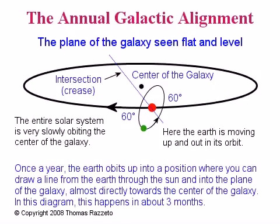The plane of the galaxy intersects the plane of the Earth-Sun orbit at an angle of sixty degrees, thirty degrees shy of straight up from the plane of the Earth-Sun orbit. This angle never changes. Once a year, the Earth orbits up into a position where you can draw a line from the Earth, through the Sun, and into the plane of the galaxy, almost directly towards the center of the galaxy. This is the annual galactic alignment.